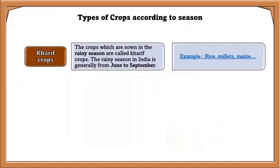Kharif crops are crops sown in the rainy season, generally from June to September in India. Paddy, maize, soybean, groundnut, and cotton are Kharif crops. These crops require a good amount of rainfall and are grown in wet and hot conditions. Kharif crops are also known as monsoon crops or autumn crops.